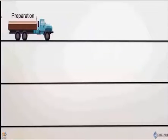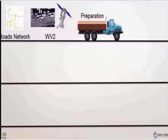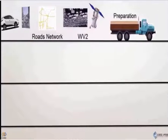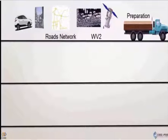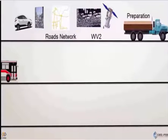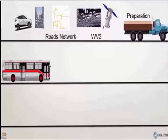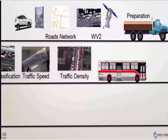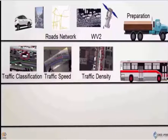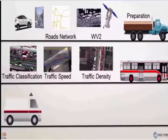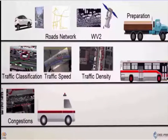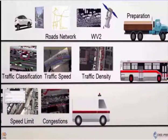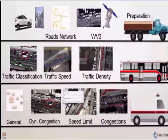In conclusion, the main inputs for the module are the road network and very high-resolution satellite images, which have been used for the calculation of traffic density, traffic speed, and vehicle classification, to conclude with different analyses that could be performed on the results.